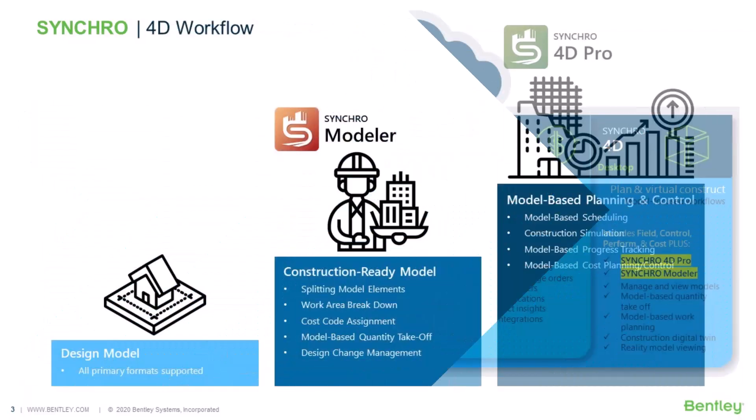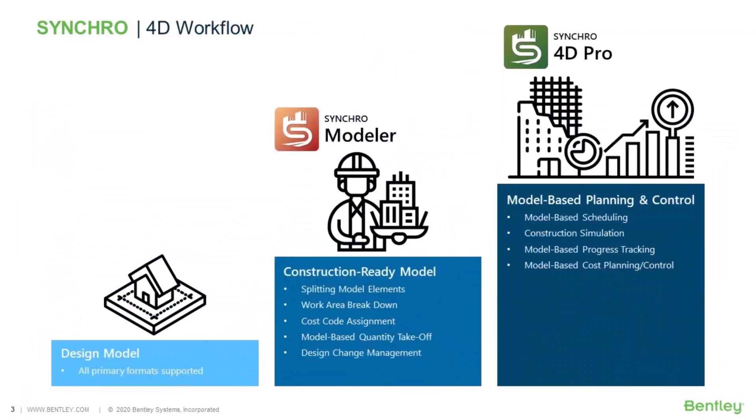You might be wondering why we need two separate pieces of software to do this job. Well, to put it simply, 4D Pro is a place where you can set up your 4D schedule and perform model-based progress tracking and cost control. On the other hand, in Modeler, you can prepare your model before you start your work in 4D Pro.